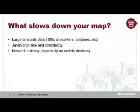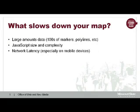When we talk about maps, there are a number of issues that come to the top of the list that slow down a map. In particular, using large amounts of data — large amounts of polylines, markers, any large amounts of data on the map — can slow them down. There are ways to mitigate that with KML layers and other techniques.